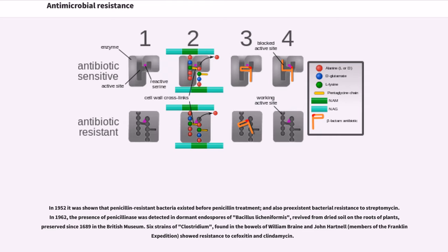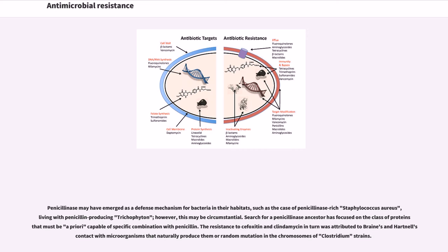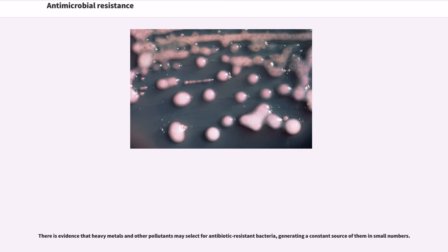Six strains of Clostridium, found in the bowels of William Brine and John Hartnell, members of the Franklin Expedition, showed resistance to cefoxitin and clindamycin. Penicillinase may have emerged as a defense mechanism for bacteria in their habitats, such as the case of penicillinase-rich Staphylococcus aureus living with penicillin-producing trichophytin. The resistance to cefoxitin and clindamycin was attributed to contact with microorganisms that naturally produce them or random mutation in the chromosomes of Clostridium strains. There is evidence that heavy metals and other pollutants may select for antibiotic-resistant bacteria, generating a constant source of them in small numbers.